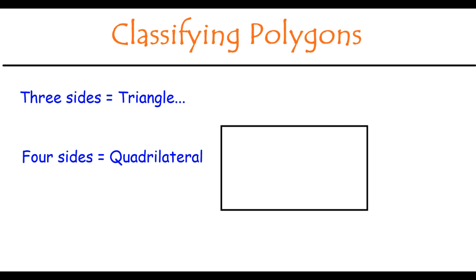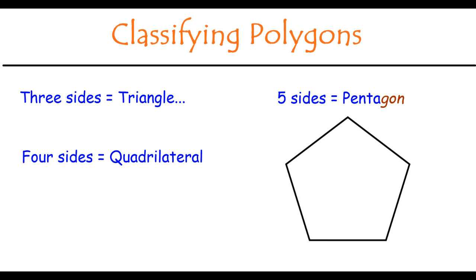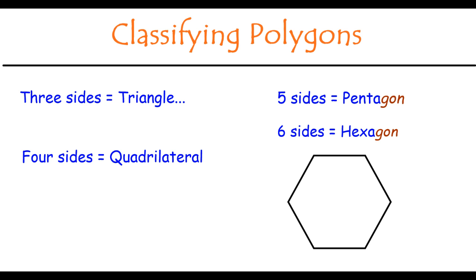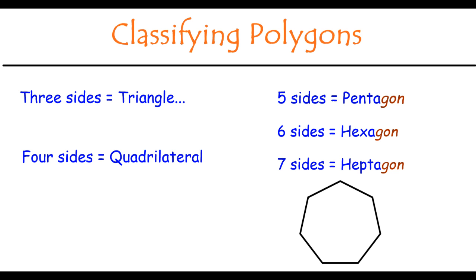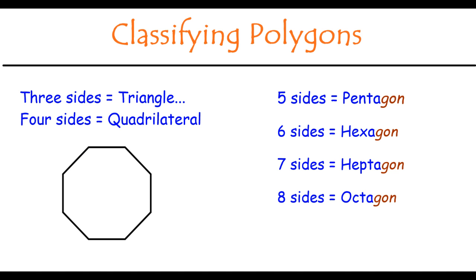As soon as we get to five, we start calling everything gons. Five sides makes something a pentagon. Six sides makes something a hexagon. Seven sides makes something a heptagon. Eight sides makes something an octagon. Now these are things that you're fairly familiar with when it comes to gons, especially pentagon, hexagon, and octagon. So go ahead and pause the video now and write down these four types of shapes, including the number of sides that they have, and unpause the video when you are ready to move on.